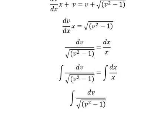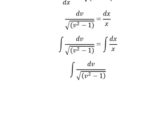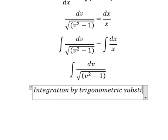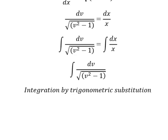So in this one we can use integration by trigonometric substitution. I will put v equals to secant of t. Later we need to do first derivative for both sides.